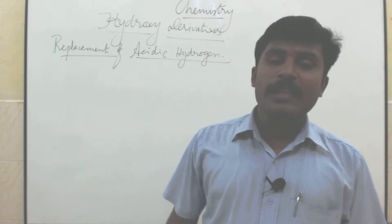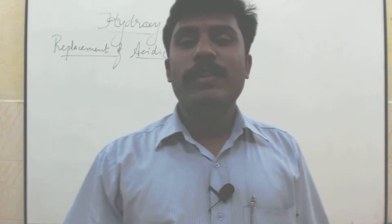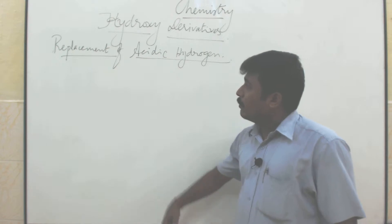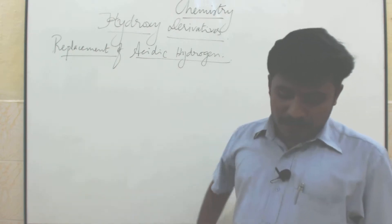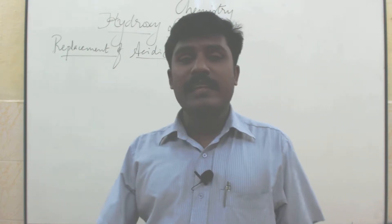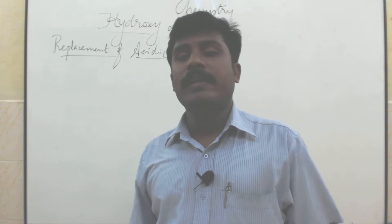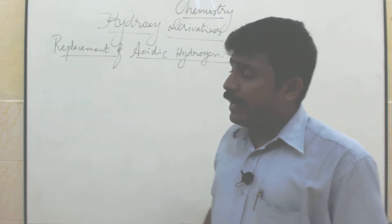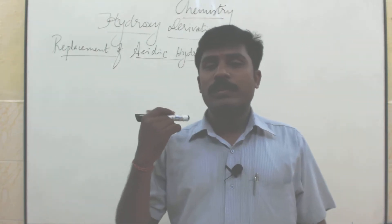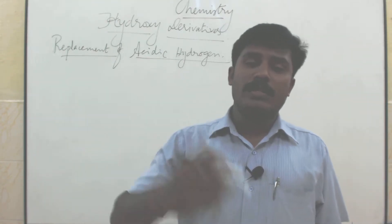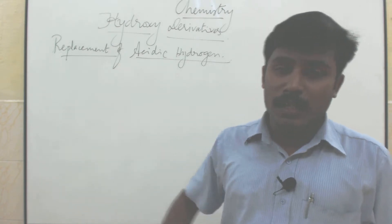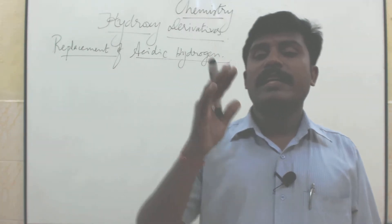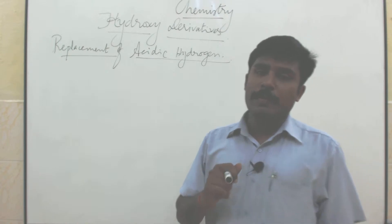Good evening, students. Today we are going to discuss hydrogenated derivatives. We are studying about ethylene glycol, that means dihydric glycol. A dihydric glycol contains 2 OH groups. One ethylene glycol contains 2 primary alcoholic groups.